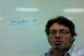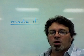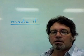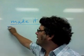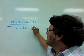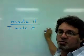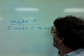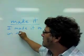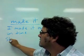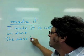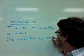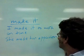When going to a place where you are expected, like an appointment, you can simply use the word 'it' — make it. I made it. You can say: I made it to work on time. Or: she made her appointment, meaning she arrived at the appointment on time.